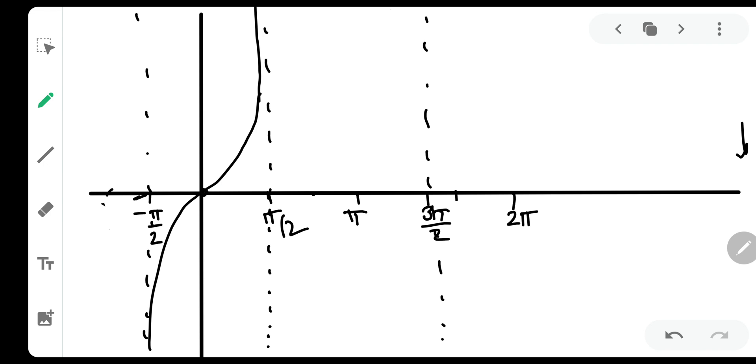The graph is 0 at 0, then again the graph goes like this. At π it is 0, and then again it goes up trying to reach infinity. Then again the graph goes like this, and at 2π, and then again it goes up and trying to reach infinity. Anyways, we do not need to draw this graph beyond 2π because our interval is only up to 2π.